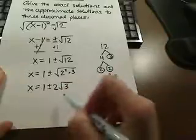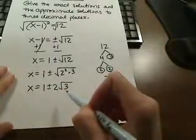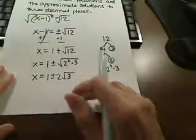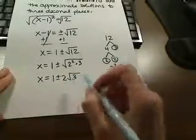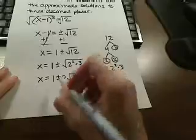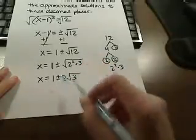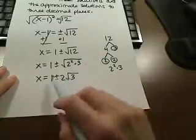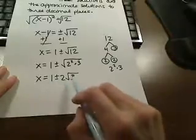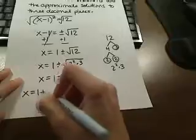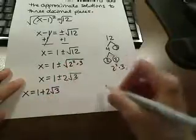And this is the exact form for the solutions. To find the approximate solutions, we're then going to need to use our calculator, and they want us to take it to three decimal places. So it's important to notice here that we actually have two solutions here. This is 1 plus 2 times the square root of 3, and 1 minus 2 times the square root of 3. So let's look at those separately for the approximates.